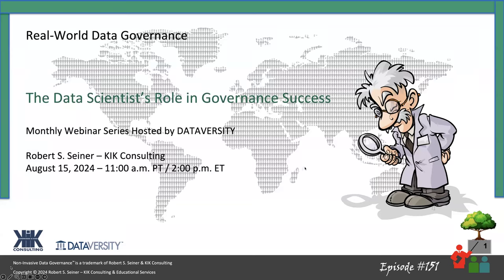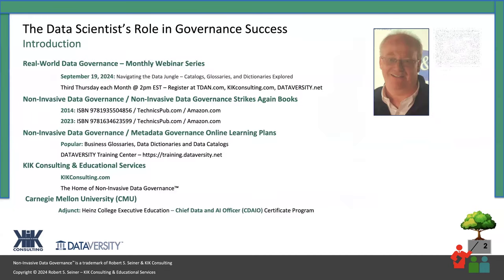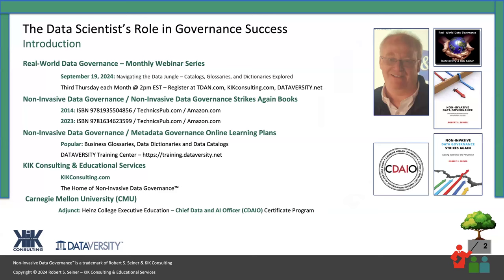Before I get started, there are a couple of things I want to share about activities I'm presently involved in. This monthly webinar series takes place on the third Thursday of every month, and we've been doing it for 12 years — this is the 13th year. Next month, on the third Thursday, we'll be talking about navigating the data jungle: data catalogs, business glossaries, and data dictionaries, and going into a deep dive as to how those three tools can help you navigate through the data jungle.